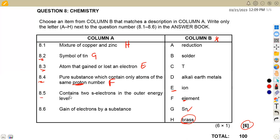8.5, it contains two electrons in the outer shell, in the outer energy level or in the outer shell. So these are alkali earth metals, guys. So here we are dealing with alkali earth metals, which is at D.